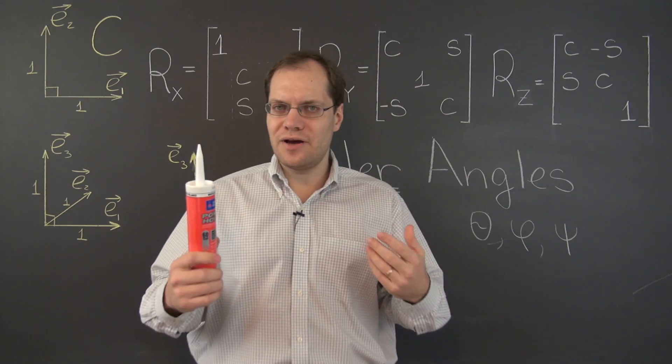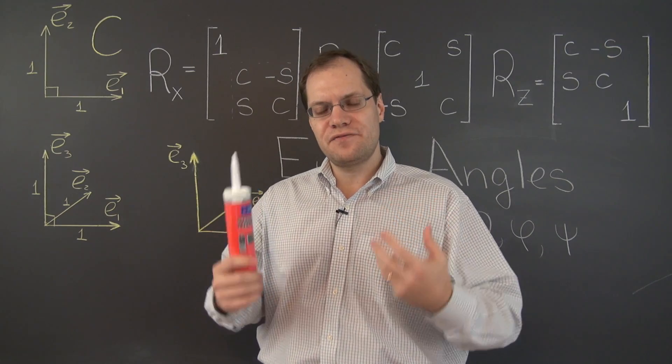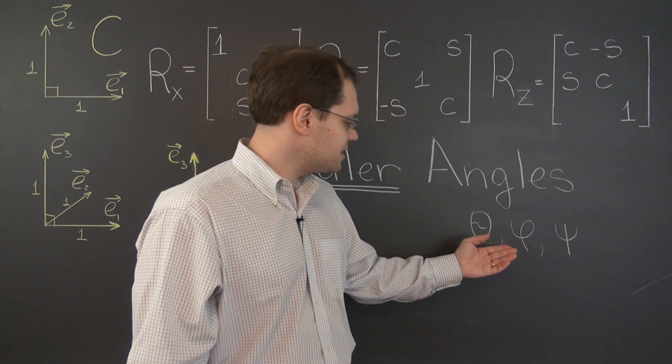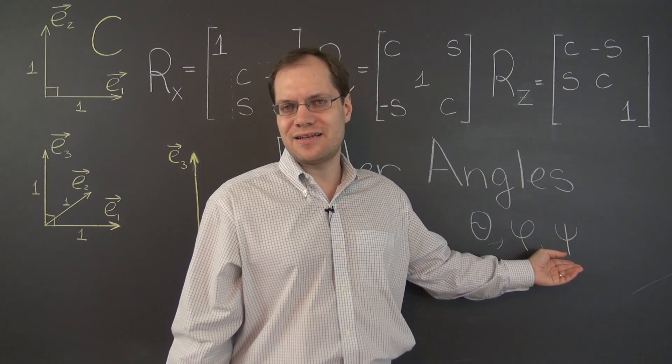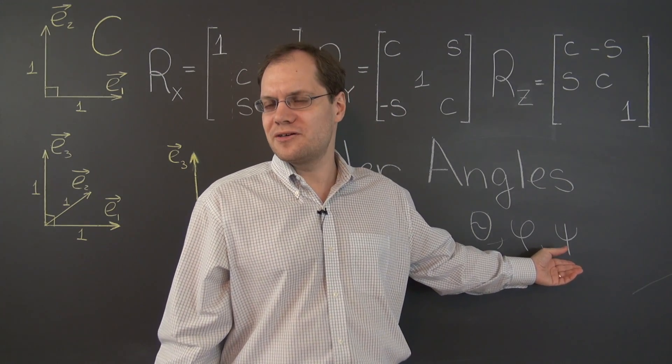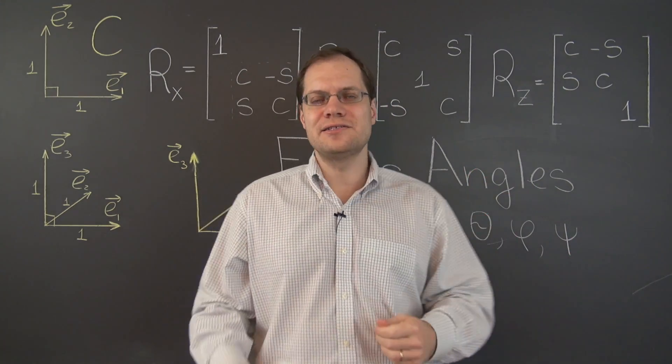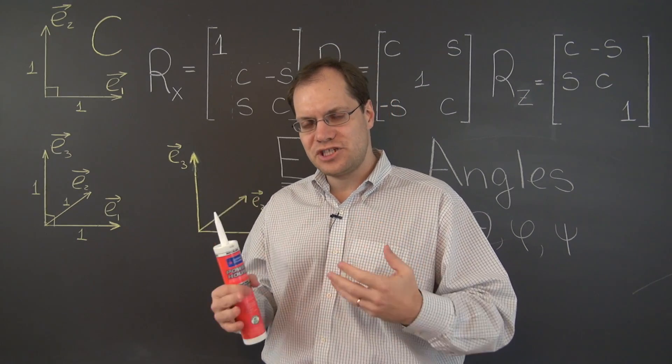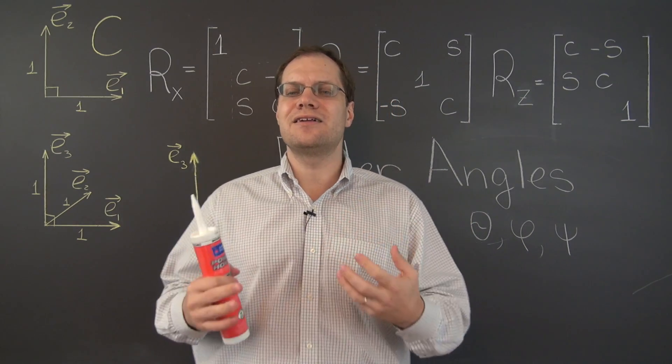And now you see how any arbitrary configuration corresponds to precisely one unique set of these almost Euler angles, those are not quite Euler angles, because the convention has to be changed. So we're right there at subtlety number two.